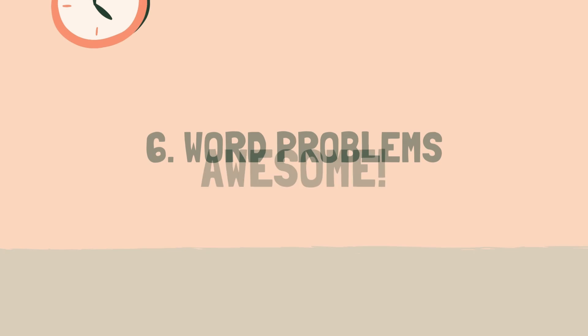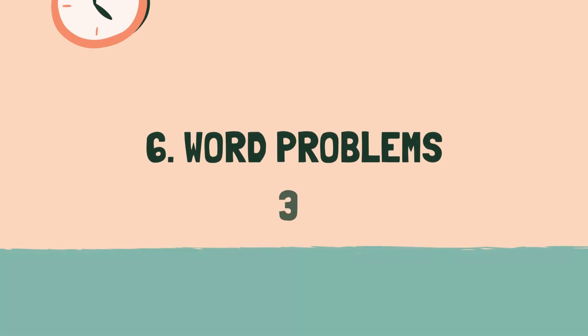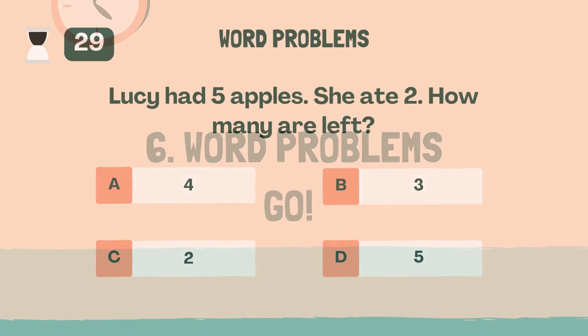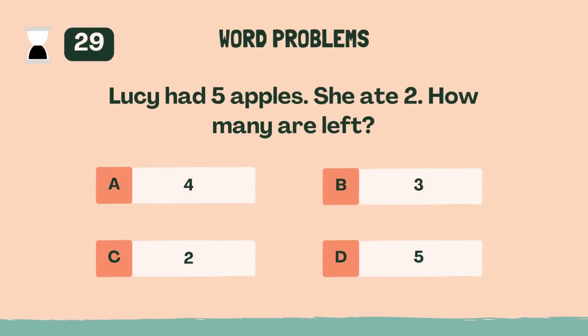Last category coming up. Category 6. Word problems. 3, 2, 1, go. Lucy had 5 apples. She ate 2. How many are left? B, 3.